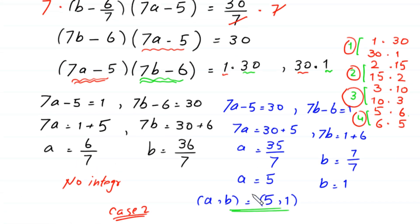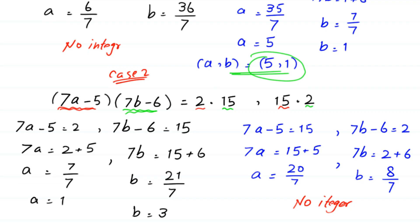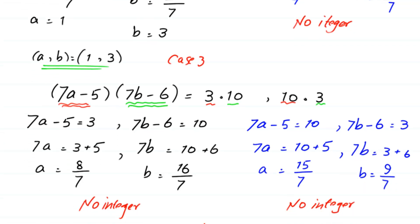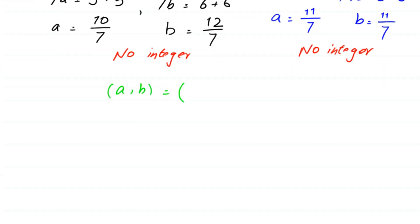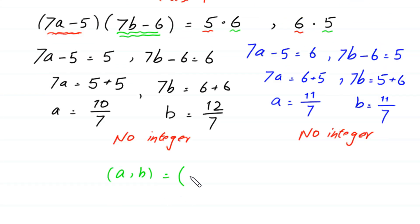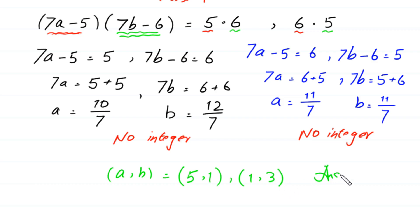So finally we have got two pairs of solutions: (a, b) = (5, 1) and (a, b) = (1, 3). This is the final answer of this equation.